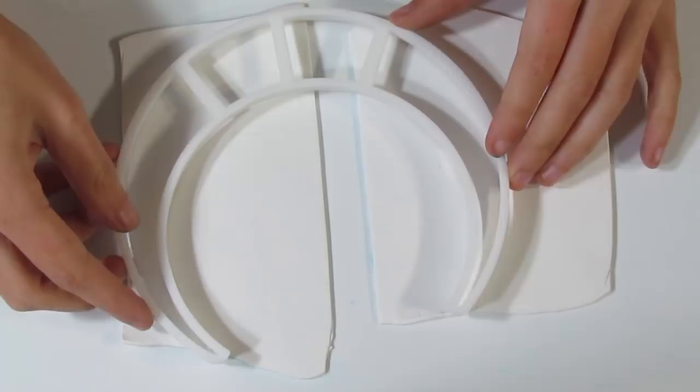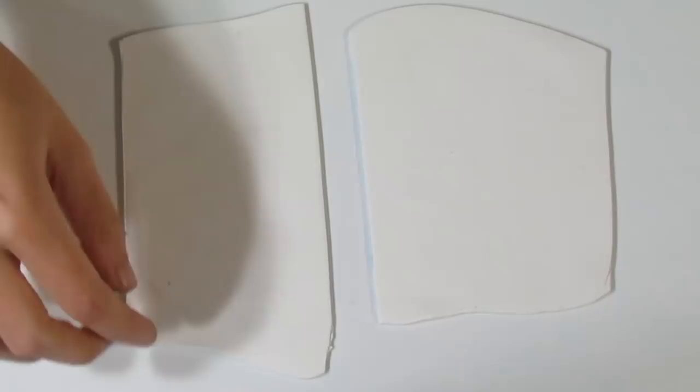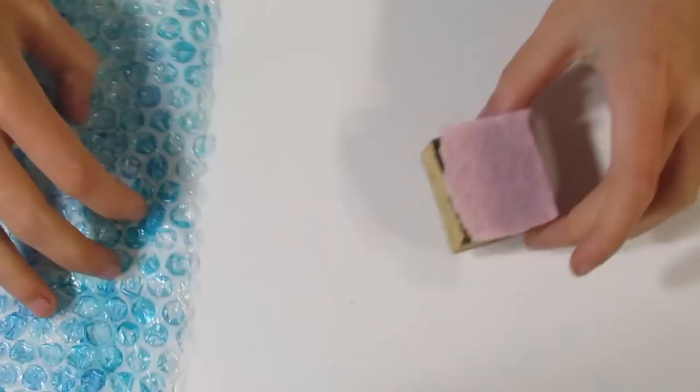So I'll start by showing you how to create the bubble wrap. Move that off to the side and bring over the bubble wrap. So this is a piece that I've already used. And you're also going to need a wooden block with a piece of felt over the top.